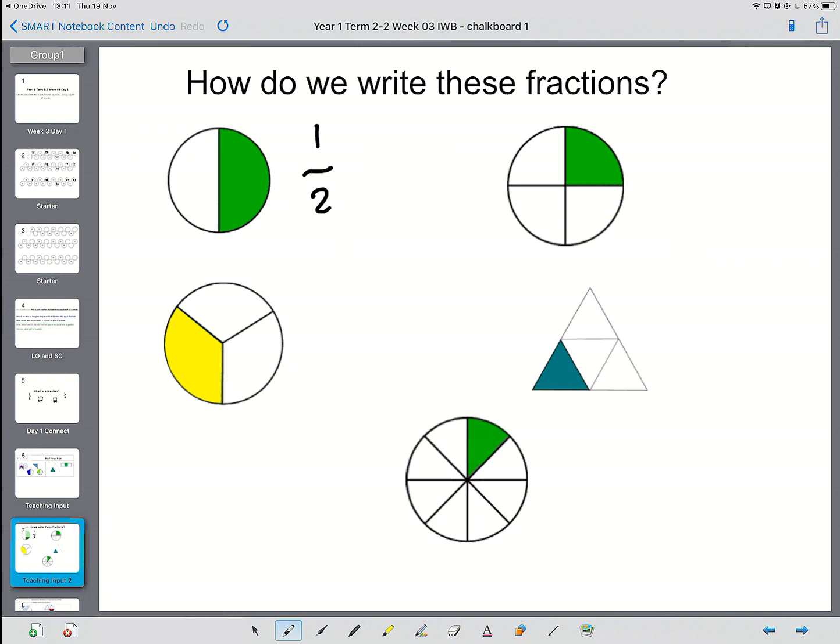So what about this one? How many parts are shaded? Brilliant. One. And how many parts are there all together? One, two, three. So this means one out of three.